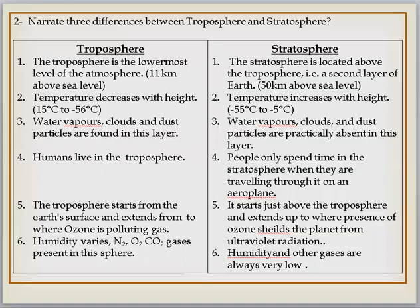The first question is: narrate three differences between troposphere and stratosphere. I have given 6 points here, we need to select any 3 that are easy. Let's see the differences. First, troposphere is the uppermost level of the atmosphere, if we talk about size, it's 11 kilometers above sea level. If we talk about stratosphere, it's located above the troposphere, roughly 50 kilometers from sea level.